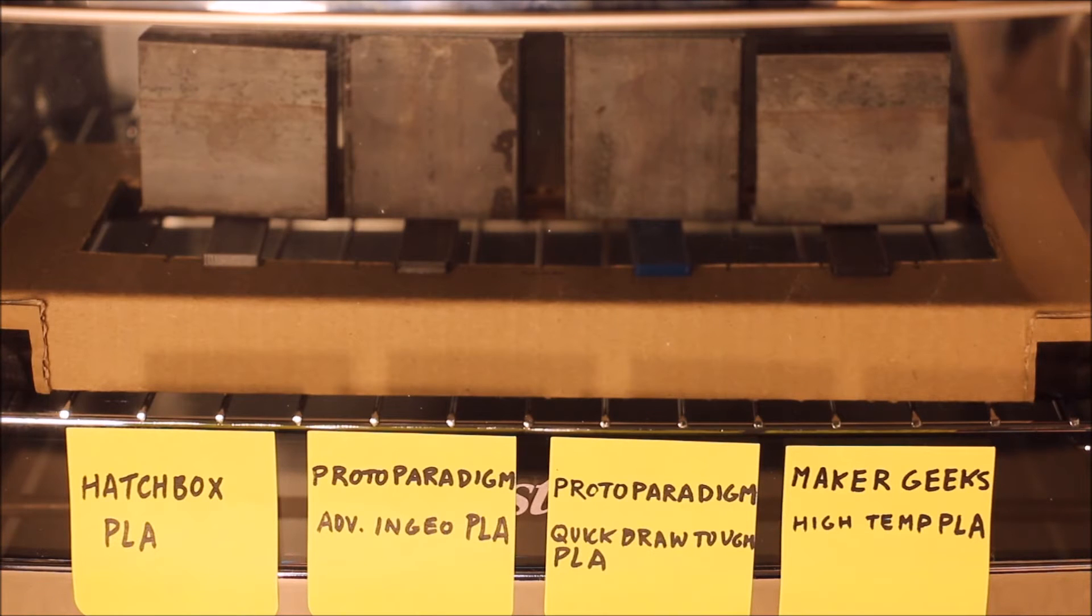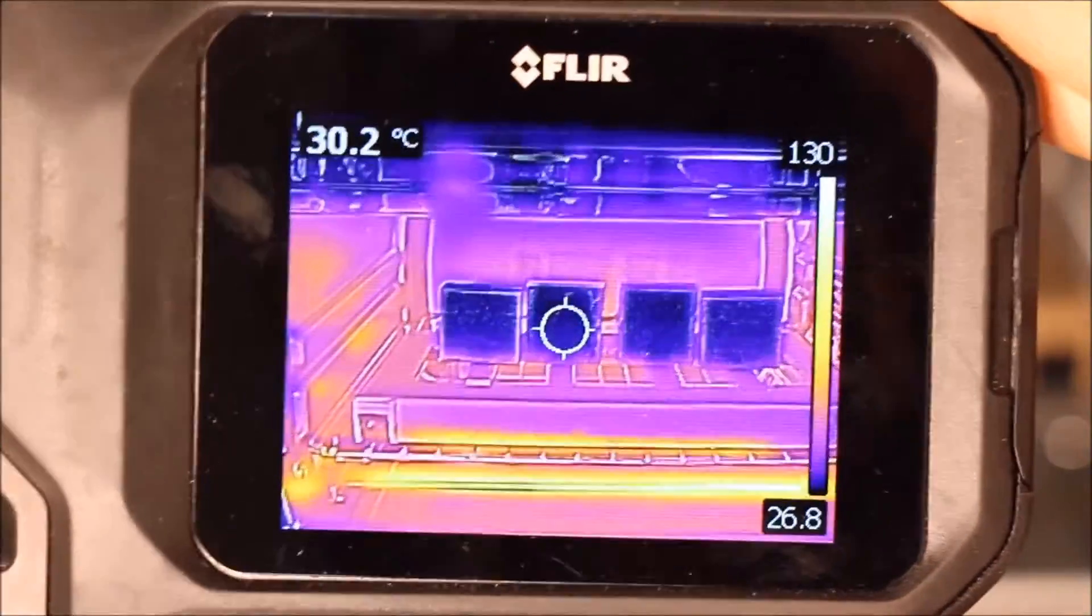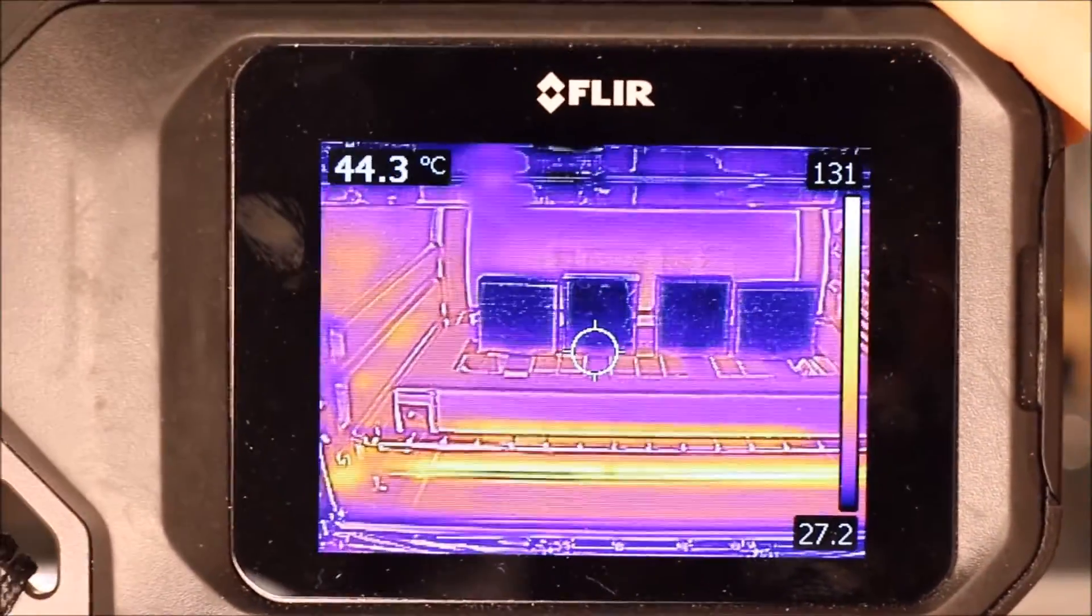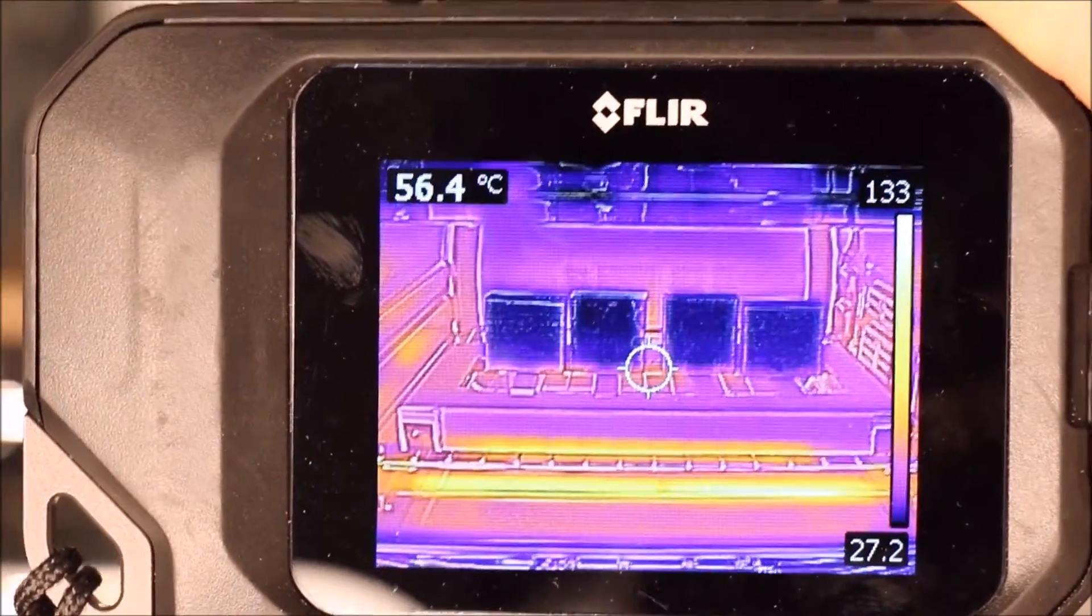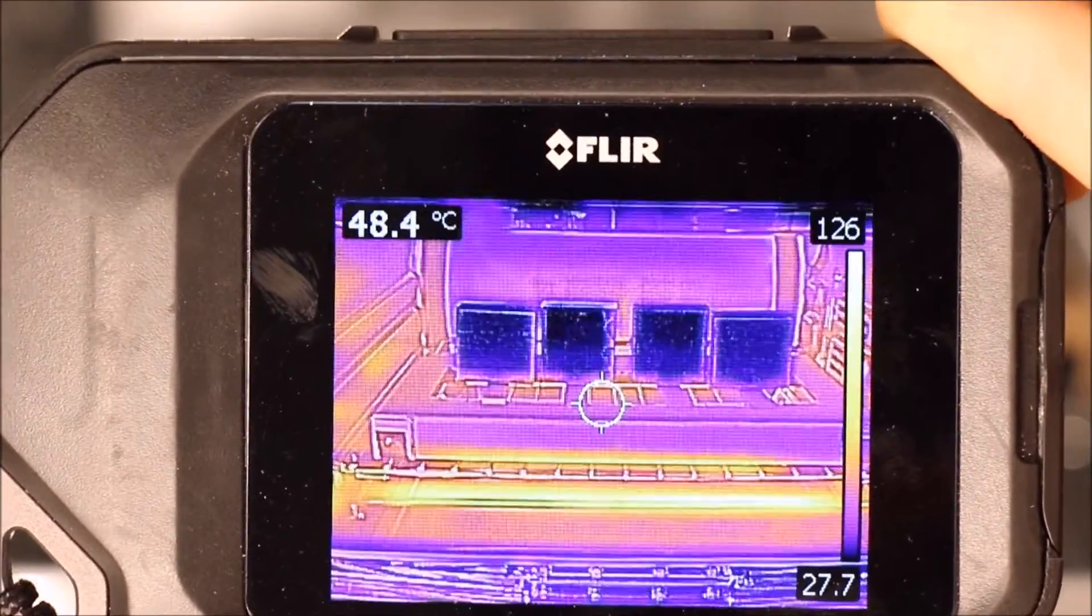So we're going to slowly increase the temperature of the oven. According to our infrared camera, you can see the weights we added are a little cooler, but the strips are approaching about 50 degrees C.